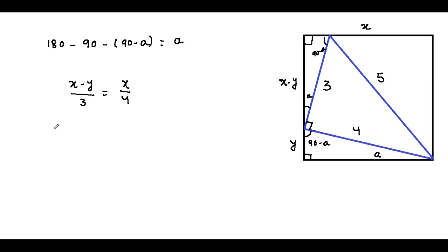Here we simplify for y. By cross multiplying we can get 4(x minus y) equals 3x. If we simplify for y, we can get y equals x divided by 4.